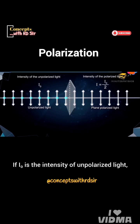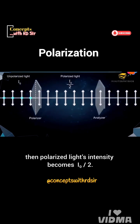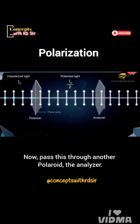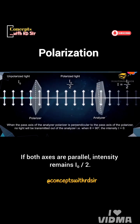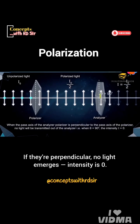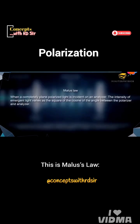If I₀ is the intensity of unpolarized light, then polarized light's intensity becomes I₀/2. Now, pass this through another polaroid called the analyzer. If both axes are parallel, intensity remains I₀/2. If they're perpendicular, no light emerges and intensity is 0. This is Malus's Law: I = I₀ cos²θ.